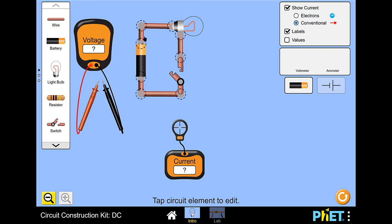This circuit consists of a battery, a lamp, and a switch, all connected in a loop.